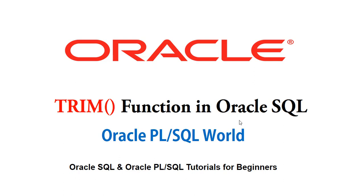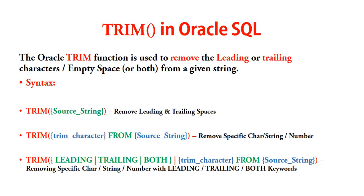In this session we are going to see only the Trim function. The Oracle Trim function is used to remove the leading or trailing characters, or both, from a given string. When we want to remove the leading or trailing characters — either a character or empty space — we can use the Trim function. Leading character indicates the left side, which means the beginning part of the given string. Trailing indicates the end of the given source string.